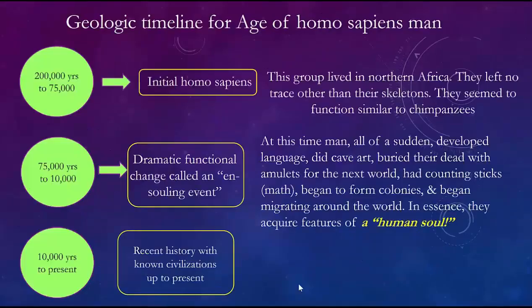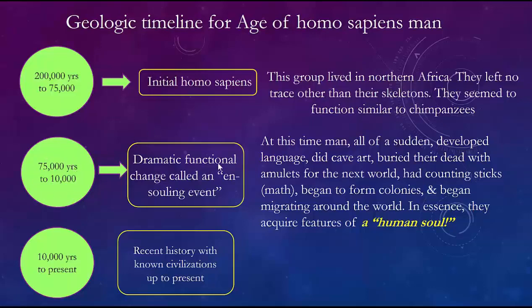Then finally you get to the fossil record of 200,000 years ago where Homo sapiens show up — we call those people the Y-chromosome Adam and the mitochondrial Eve, our first great-great-great grandparents. Looking at the geological timeline for Homo sapiens — upright men like us but with different character — beginning about 200,000 years going up to 75,000 years, these initial Homo sapiens were confined to northern Africa. They left no trace other than their skeletons and seemed to function similar to chimpanzees — no cultural record whatsoever, just bones.